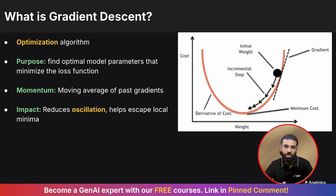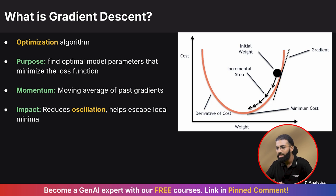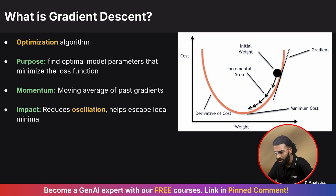This might be the most favorite question for any interviewer: what is gradient descent? Start with a basic definition — gradient descent is an optimization algorithm used to minimize a loss function by iteratively updating model parameters in the direction of the negative gradient. Then explain how gradient descent calculates the gradients of loss with respect to weights and updates the weights to reduce error, with the purpose of finding optimal model parameters that minimize the loss function.